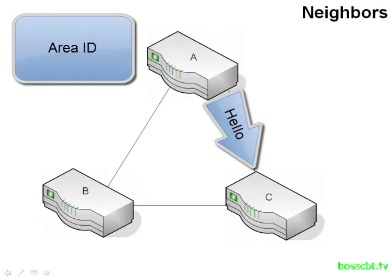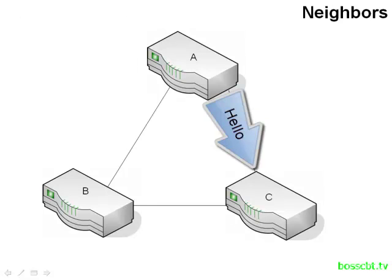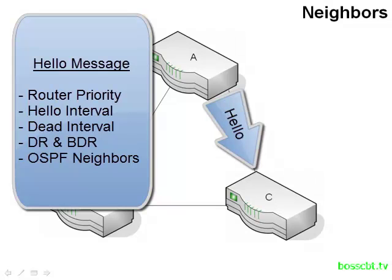There's also something called an area ID. We mentioned a hierarchical approach to implementing OSPF, and when we talked about areas being a way to segment your network, each area has its own ID — so that information would be in the hello packet as well. There's also other stuff like a router priority, the hello interval and a dead interval, a designated and backup router, and a list of all the other OSPF neighbors a router has made. We'll go through all of this, so by the time you're done with all the OSPF tutorials, you'll know what these mean.